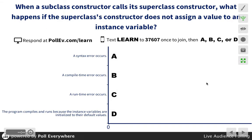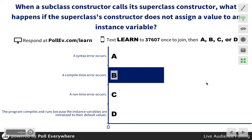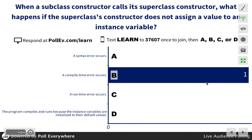When a subclass constructor calls its superclass constructor, what happens if the superclass constructor does not assign a value to an instance variable? A: a syntax error occurs. B: a compile time error occurs. C: a run time error occurs. Or D: the program compiles and runs because the instance variables are instantiated to their default values.